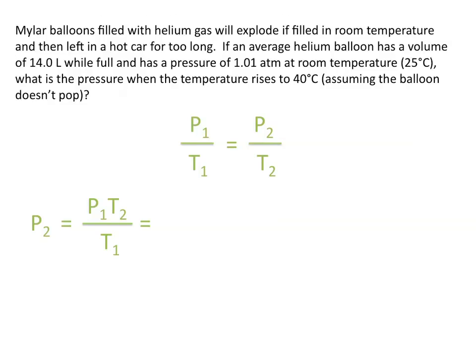When we rearrange this equation to solve for the final pressure, we get that the final pressure equals the initial pressure times the final temperature, all divided by the initial temperature.